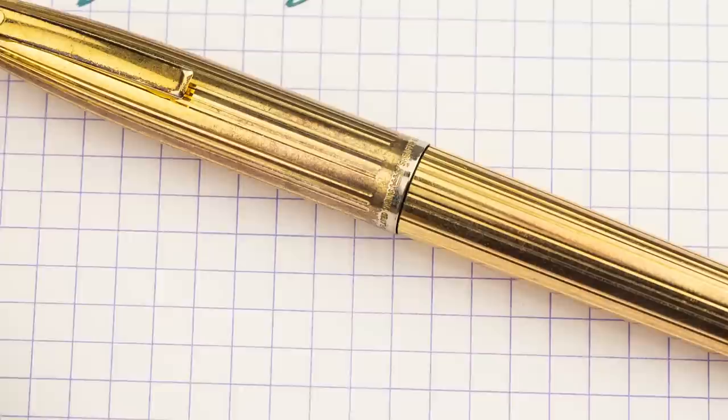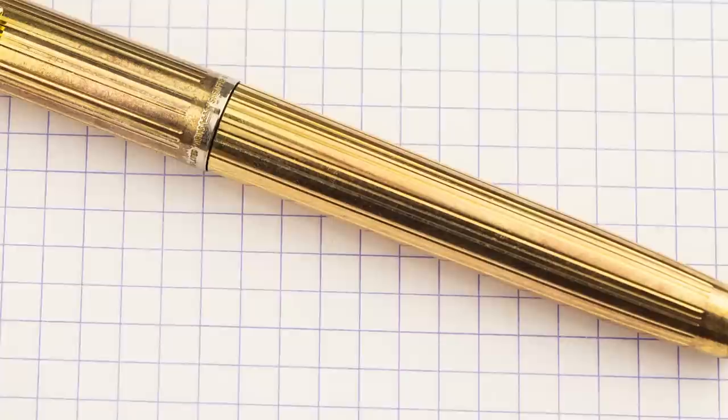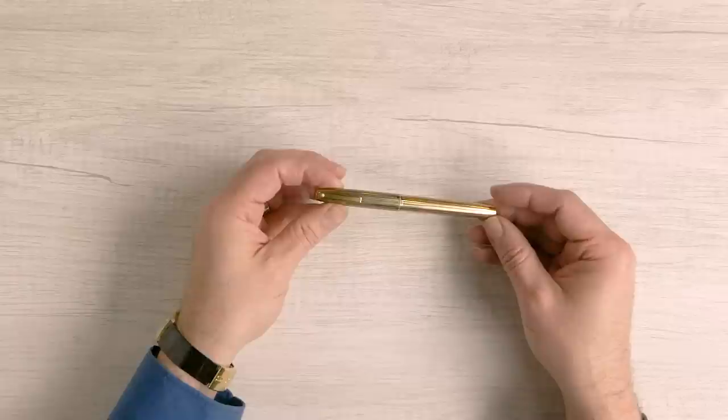Schaefer came out with the Imperial around 1960 and it came in a number of different variations. Early models were touchdown fill. Most Imperials you're going to find are going to be cartridge converter. Some are cartridge only. Basically this is a slimmer, stripped-down version of the famous PFM, or Pen for Men.